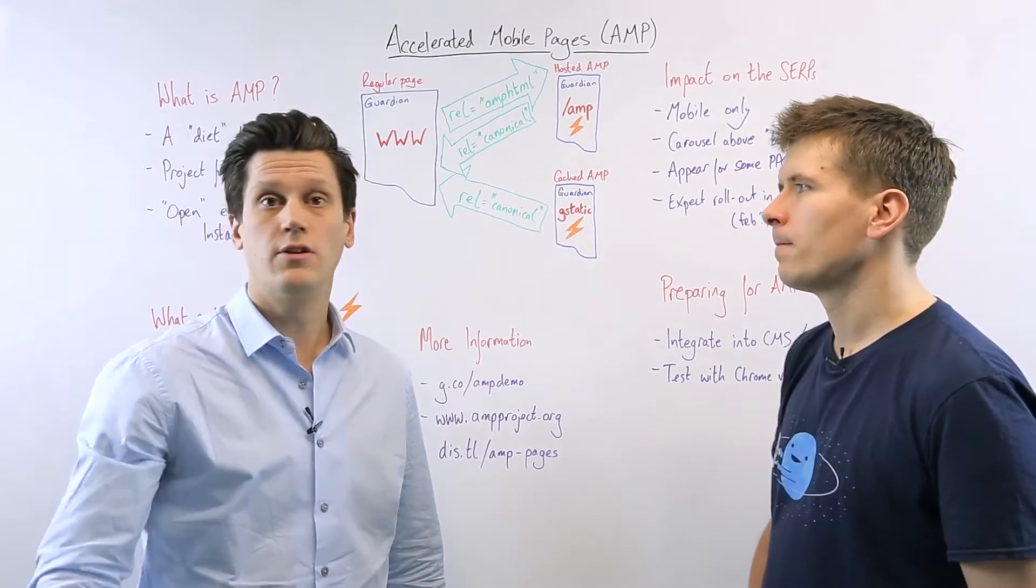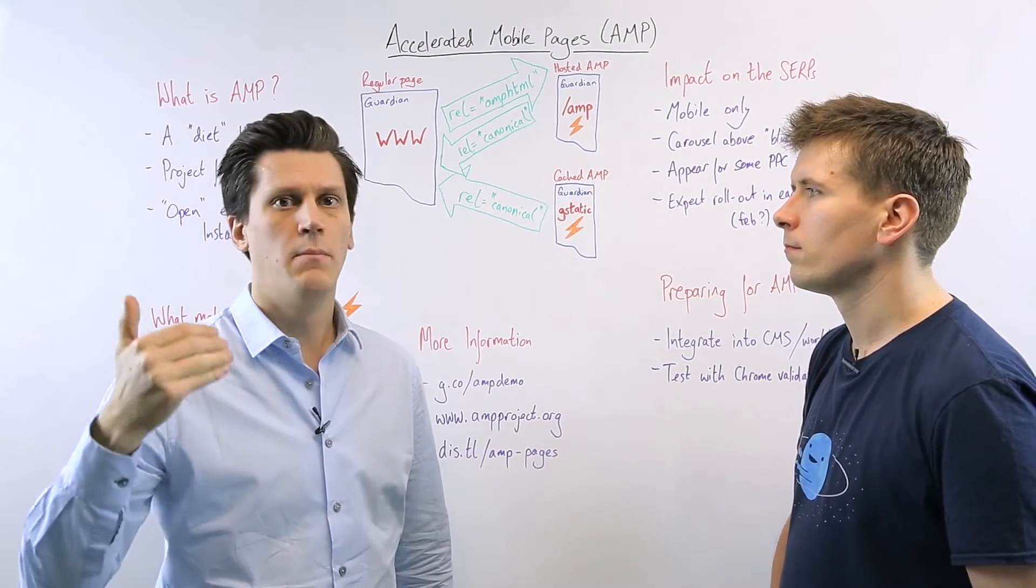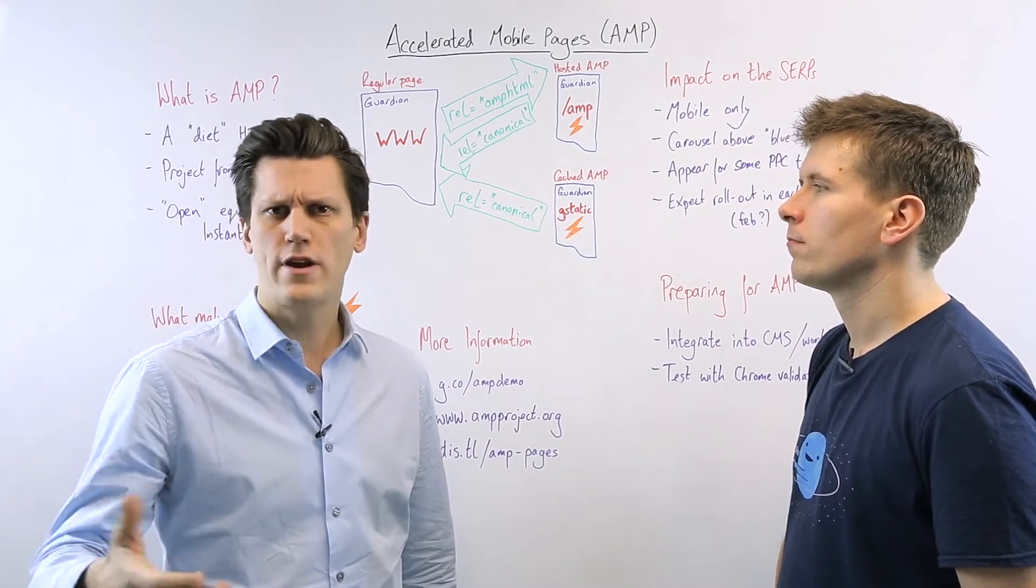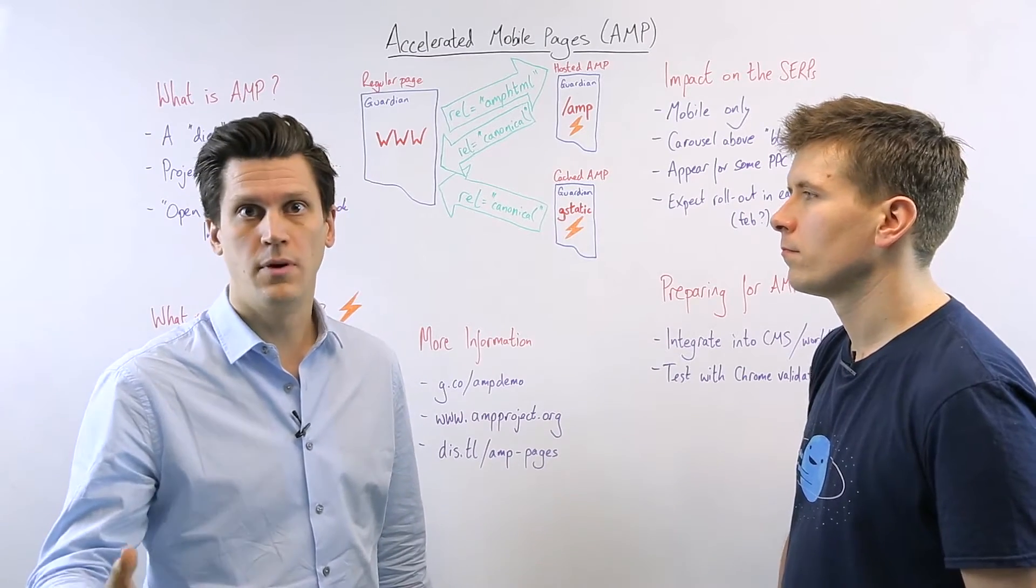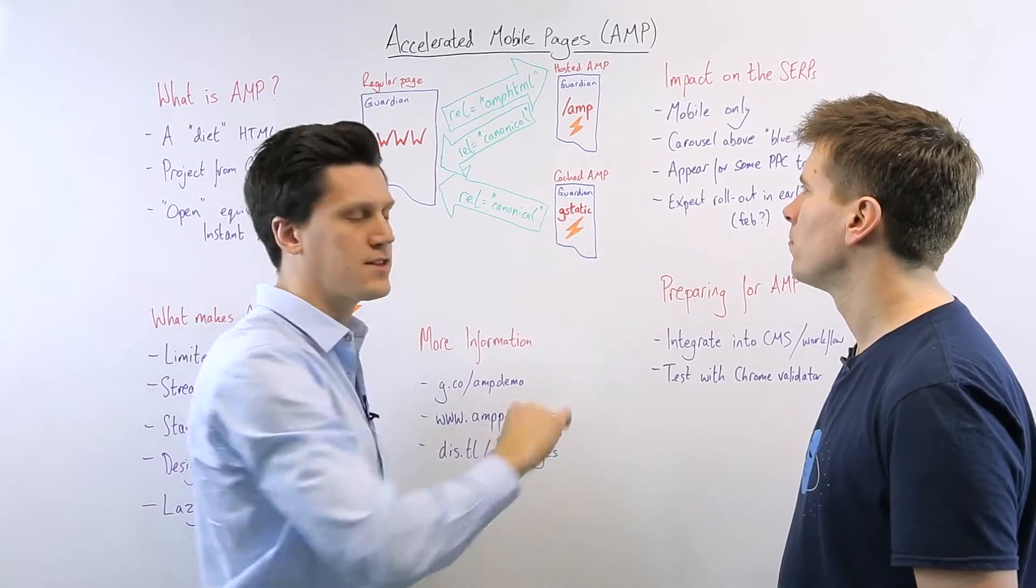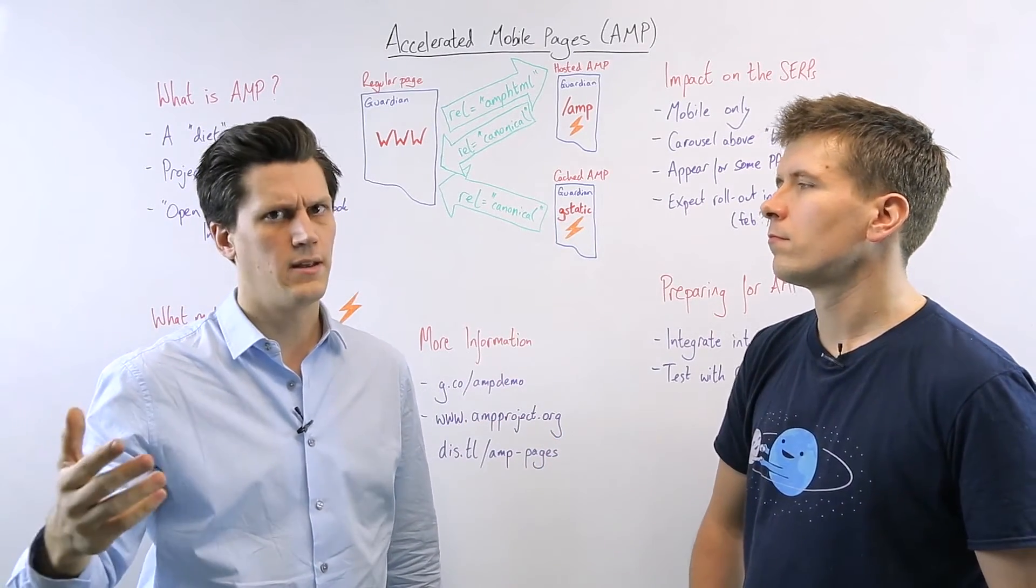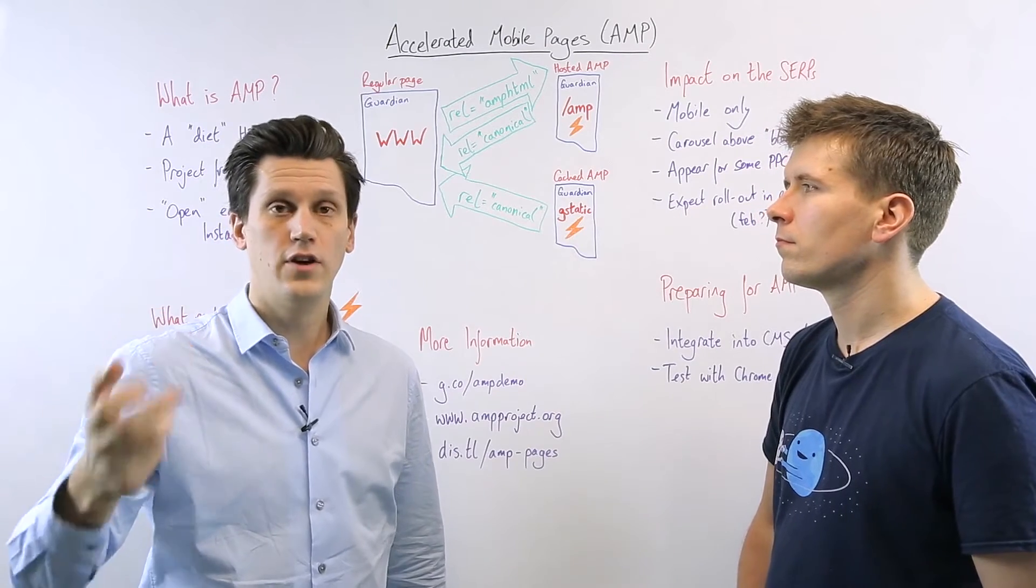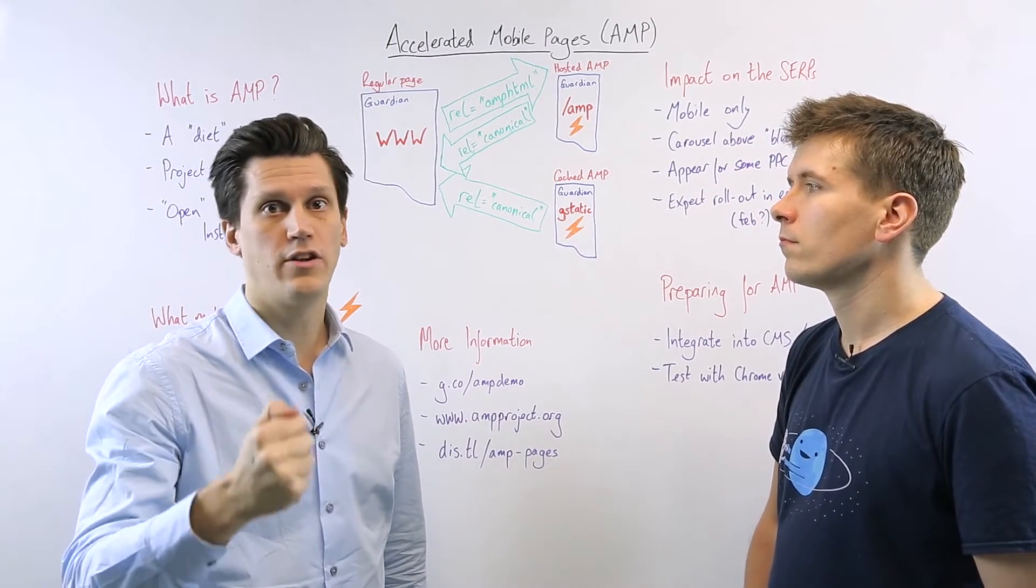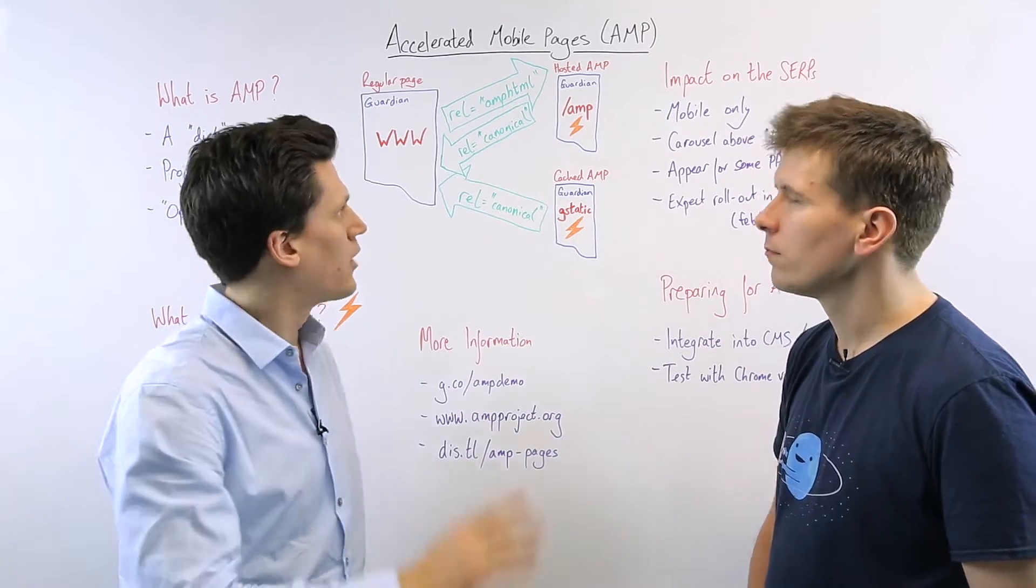And it is designed to be faster. But they've also rolled out this free hosted cached platform part of the deal as well, which is labeled here with the gstatic. So when you actually see these things showing up in Google search results, which we'll talk about in a moment, the version that shows up there will typically be hosted on a gstatic.com. In other words, a Google hosted cached version.